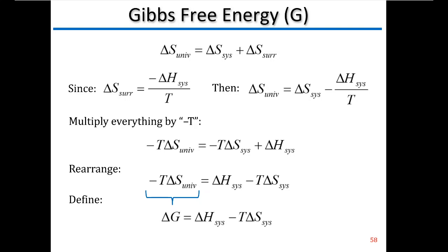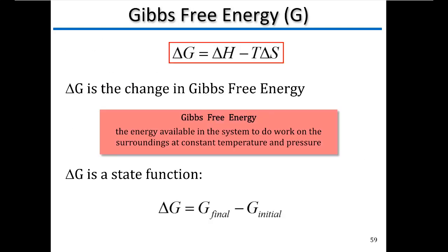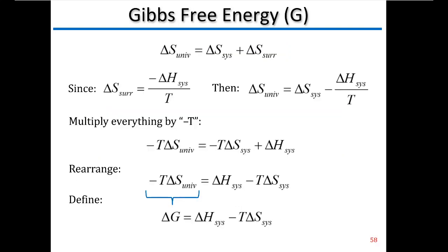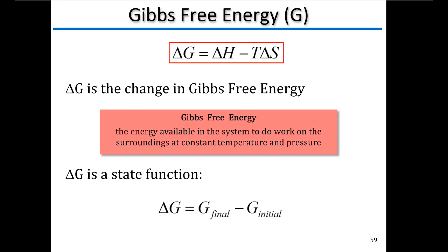Let's talk about how to put that into practice. Delta G is the change in Gibbs free energy. Gibbs free energy is the energy available in the system to do work on the surroundings at constant temperature and pressure. Everything is expressed in terms of the system — what's done by the system is done to the surroundings and vice versa. Delta G is a state function, so delta G equals G final minus G initial.